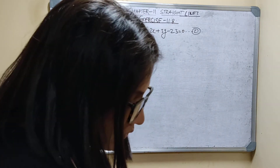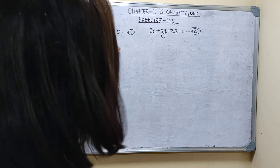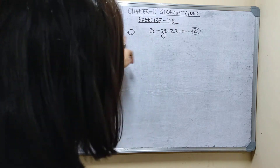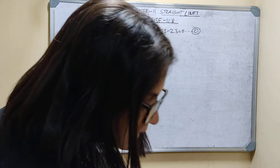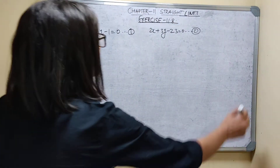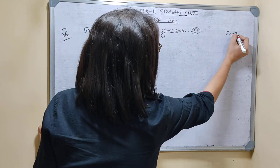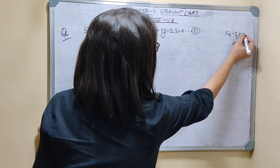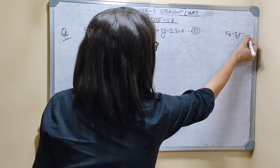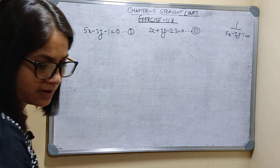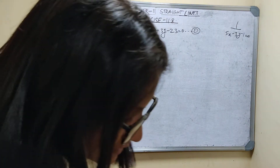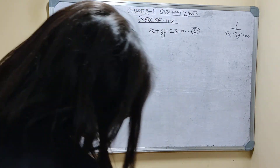Find the equation of the line through the point of intersection of these two lines and perpendicular to the given line: 5x minus 3y minus 1 is equal to 0. We need the line perpendicular to 5x minus 3y minus 1 equals 0.